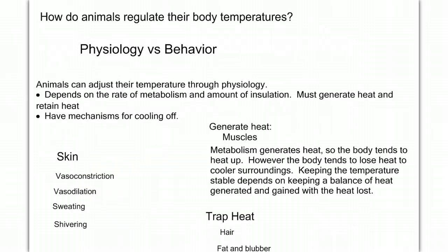Now, how do animals regulate their body temperature? We regulate body temperature with both physiology and behavior. Animals can adjust temperature through physiology depending on the rate of metabolism and the amount of insulation. It's a two-part system: we have to generate heat, which we do through metabolism as we burn fuel — energy is given off as heat because those energy conversions aren't perfect — and then we have to trap that heat through fat, fur, and hair.